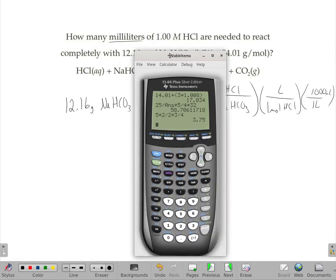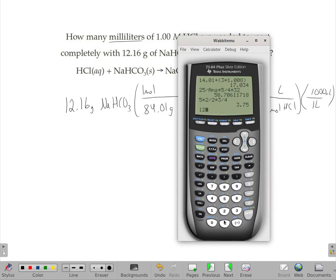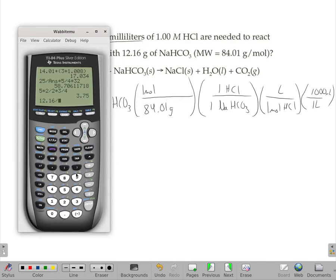So I need to write differently, so I'm going to start here. 12.16, and then I will divide by 84.01 times 1 divided by 1, divided by 1 times 1,000.